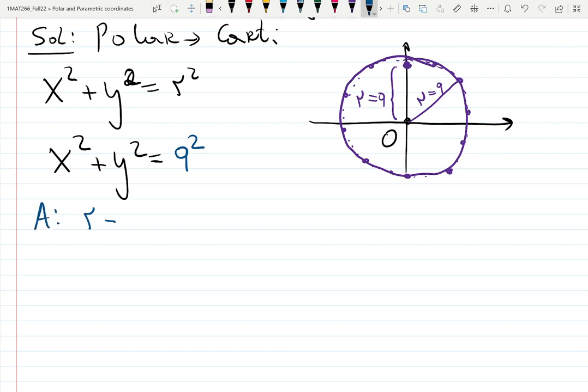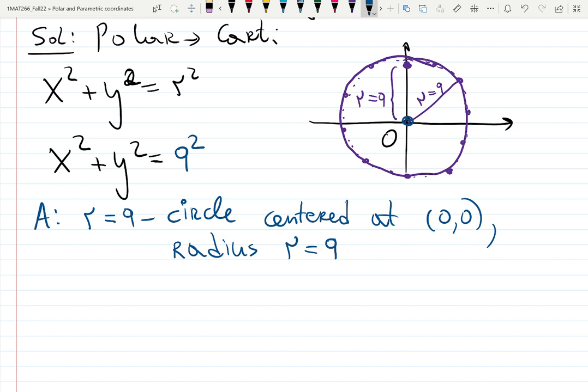Answer, r equals 9 is a circle, what? Who want to say? Centered at 0, 0, correct. What else? That's not enough. See, circles can be big and small. What else? Radius. That's the second feature of the circle. Radius, what? 9. Well, how big the radius is for the circle? 9. So now we know.